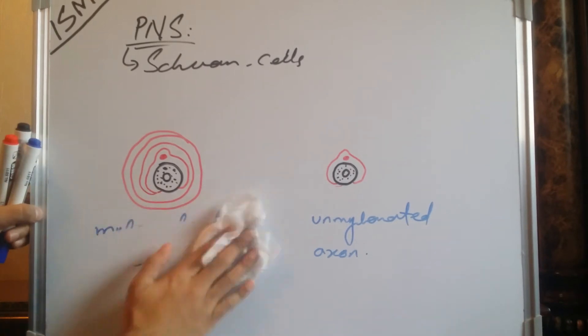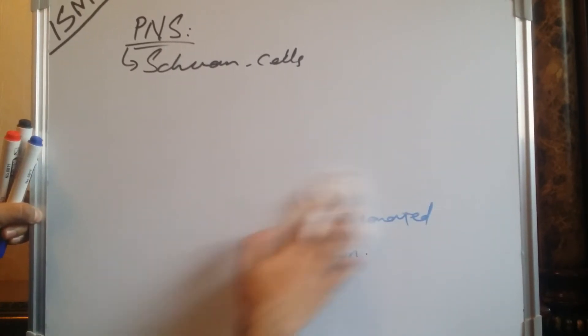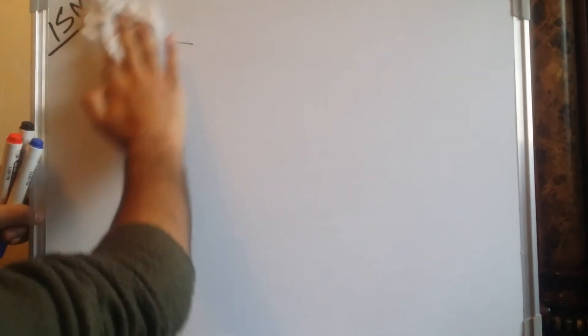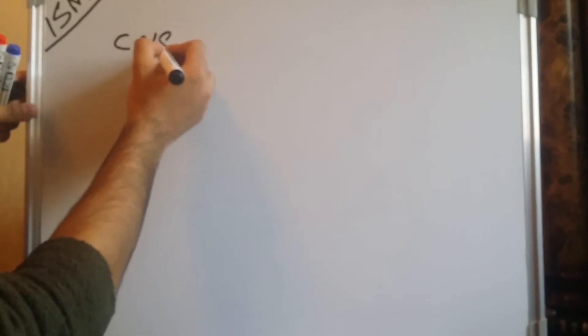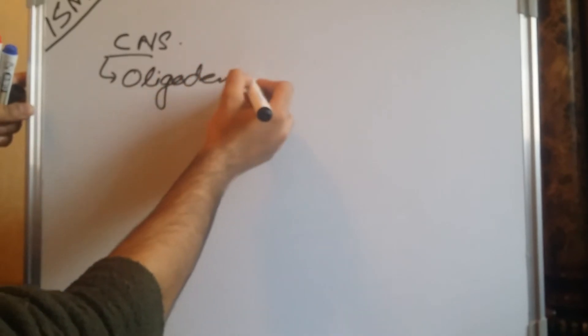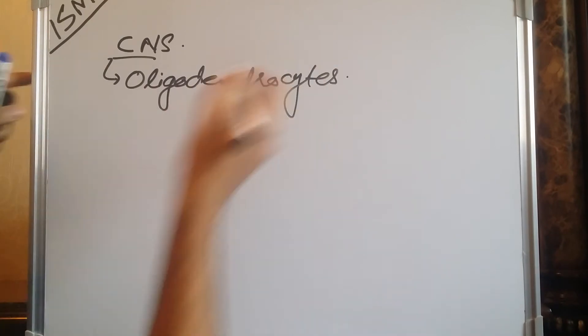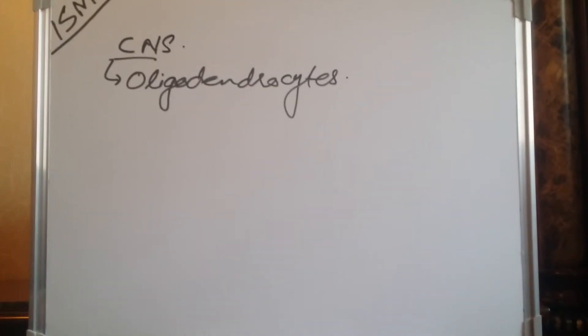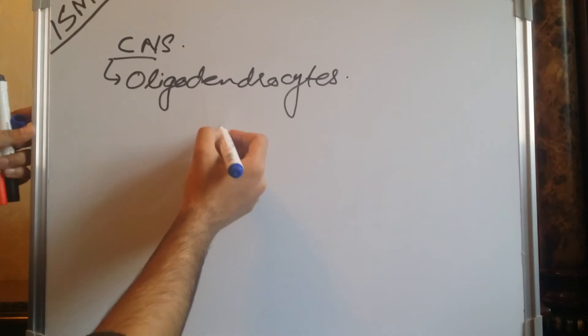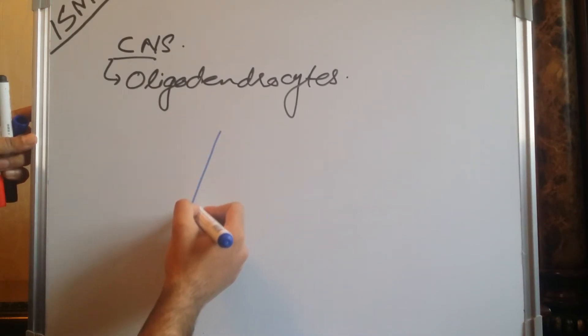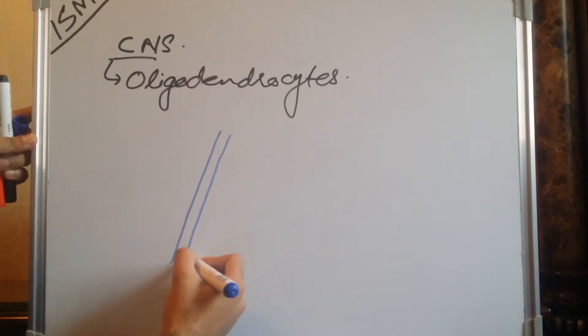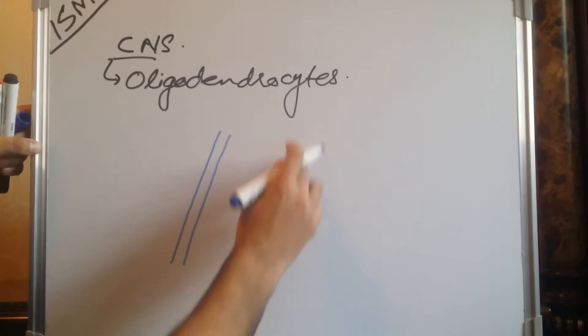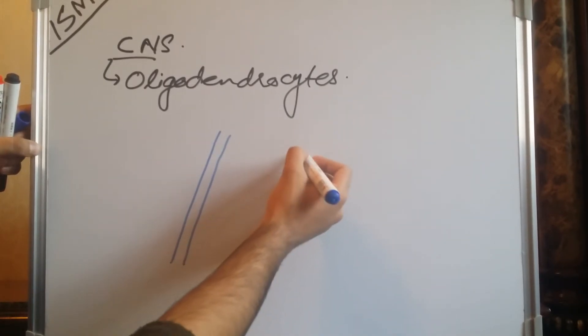In the central nervous system, the process is a little bit different. In the central nervous system, oligodendrocytes are the cells which provide myelination, and they are present near the neurons.